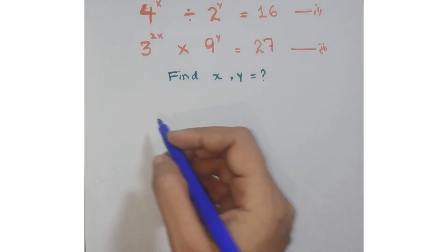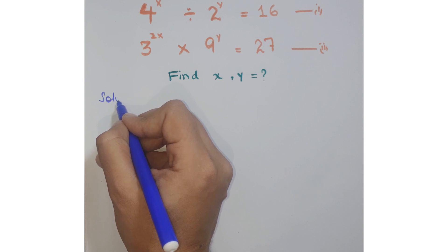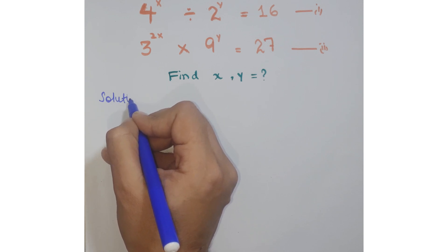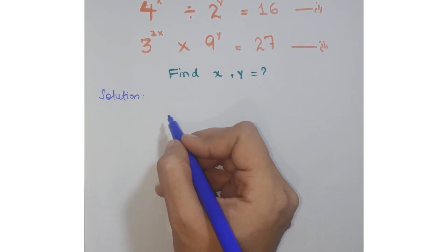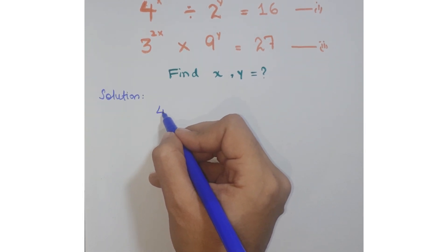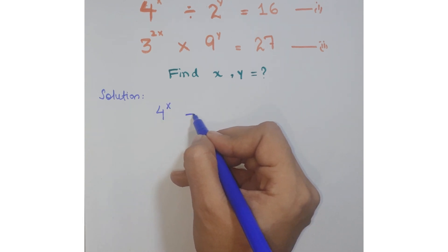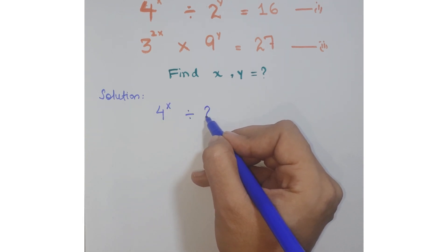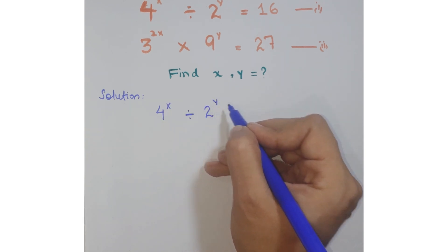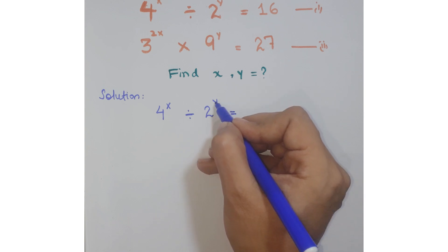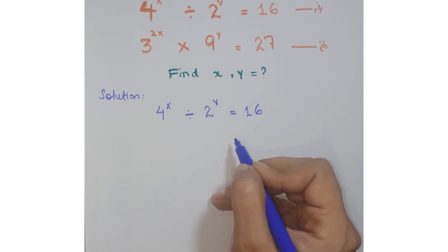Now let's see how we proceed to find the solution of this question. Taking equation 1 first, that is 4 to the power x divided by 2 to the power y is equal to 16.